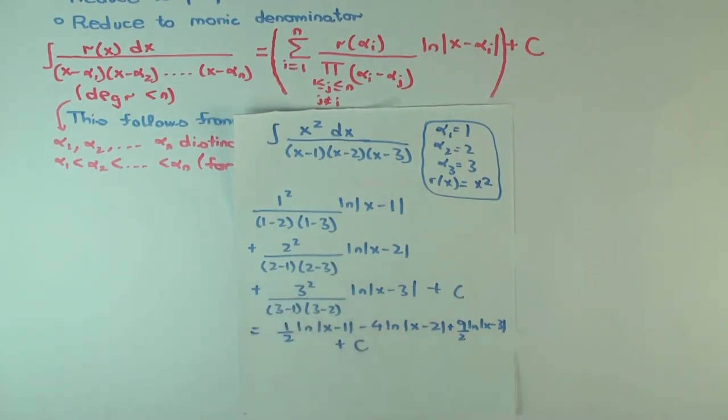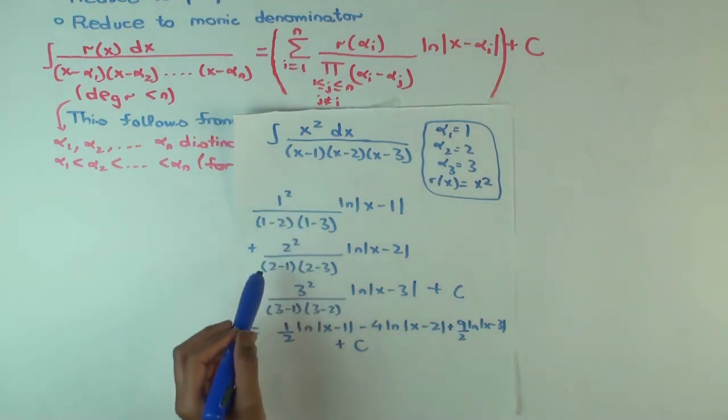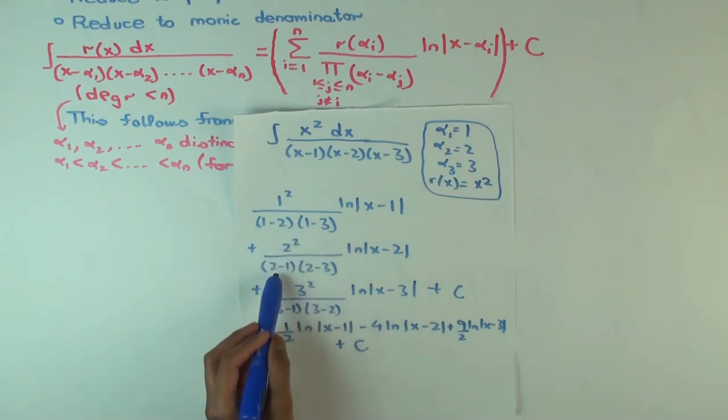And you can actually practice that and see that it works out that way. Let's just check. So this is 1 over 4 over 1 and 9 over 2. Looks good.